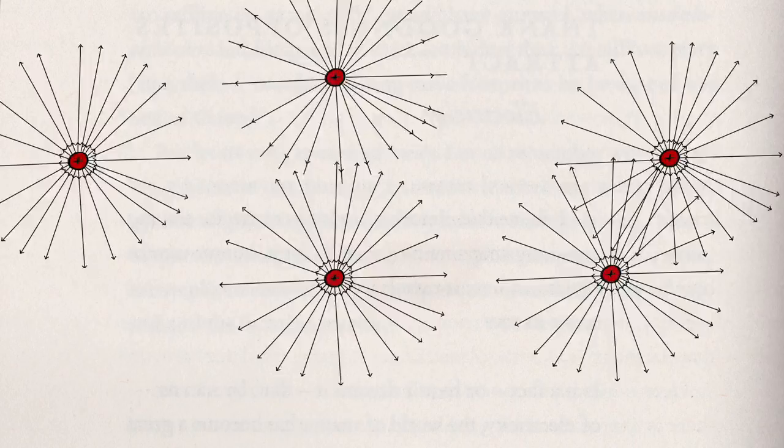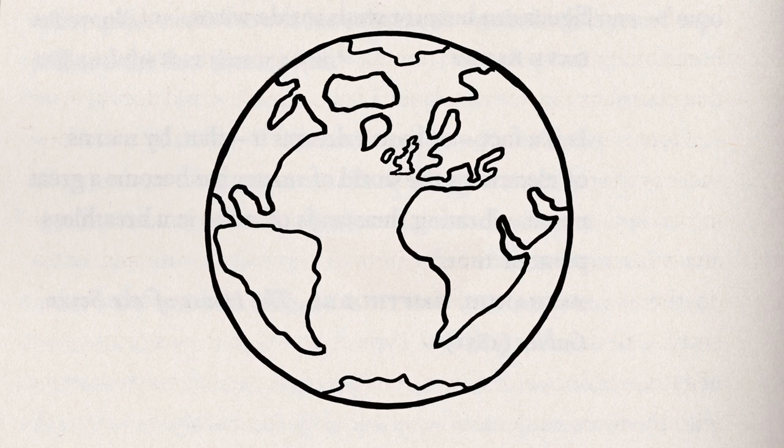But if it was possible to magically remove all the electrons in a single mosquito, the remaining positive nuclei would repel each other with a tremendously powerful electric force, causing the mosquito to explode with the energy equivalent of a global mass extinction.